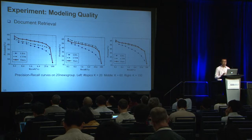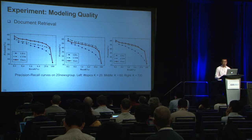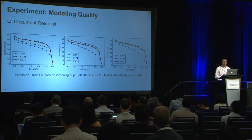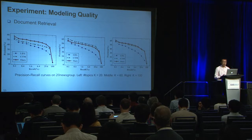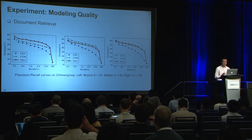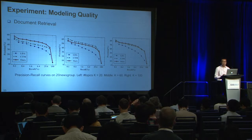First, we evaluate topic modeling quality by measuring document retrieval performance on the 20 Newsgroups dataset. A retrieved document is relevant to the query when they share the same class label. For LDA and CTM, document similarity is measured as the inner product of their topic proportions; for our model, we use the inner product of document embedding vectors. The figure shows retrieval results with varying numbers of topics. Our model obtains competitive performance with CTM, both of which capture topic correlations and greatly improve over LDA, validating that our method achieves lower modeling complexity while being as accurate and powerful as previous complicated correlation models.